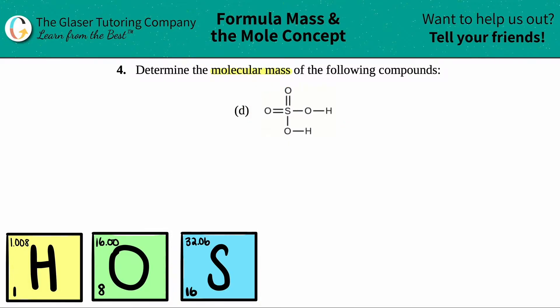Well, I see a bunch of elements here. I see three different elements. I see that I have an S in the middle, and S stands for sulfur. I see that I have these O's, and O's are oxygen. And then I have these H's, and H's stand for hydrogens. So I have three different elements here, but I need to find out how many total I have.